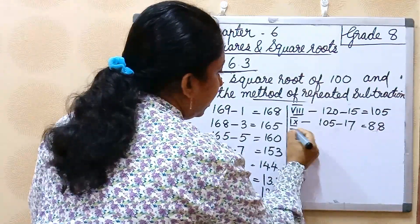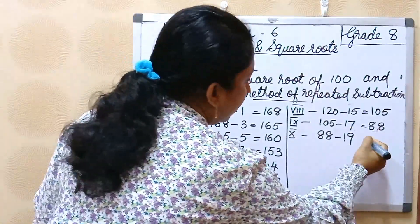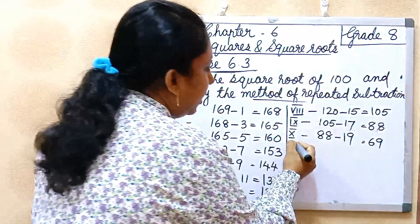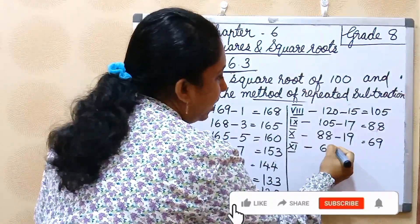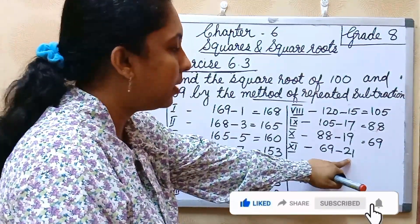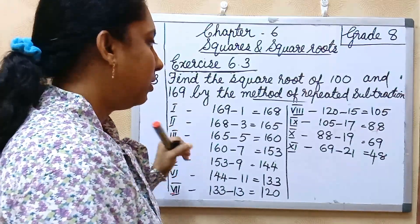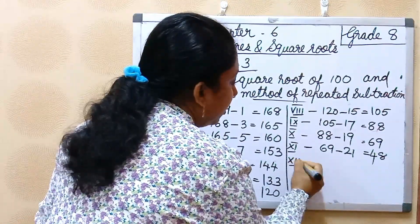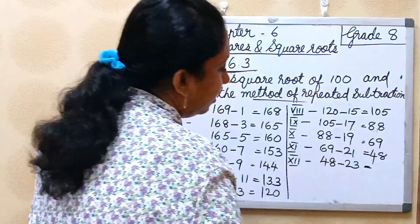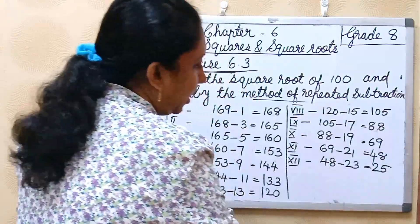Then tenth step, 88 minus 19, so 69. Then 11th step, 69 minus 21, so 48. Then 12th step, 48 minus 23, so 25.